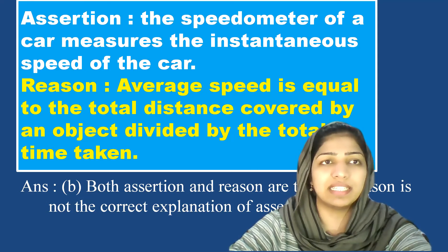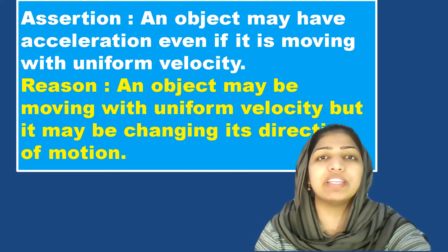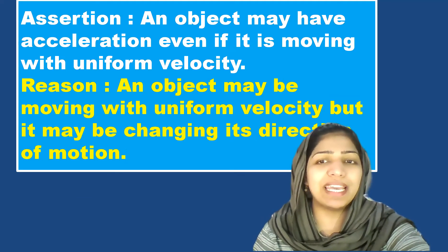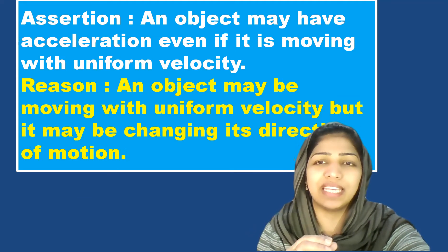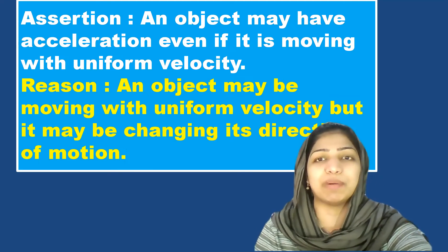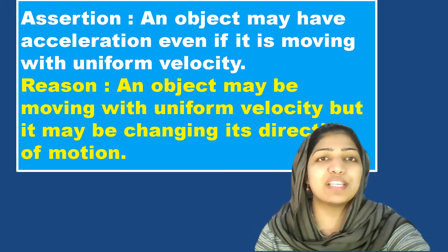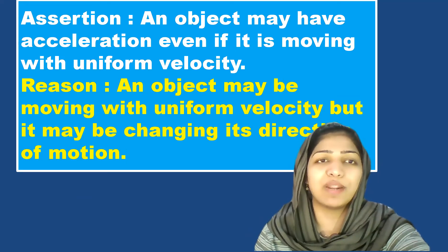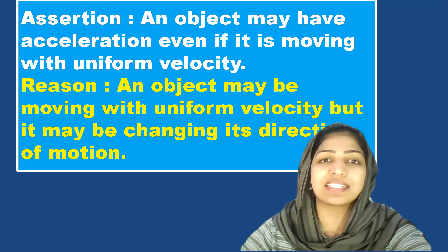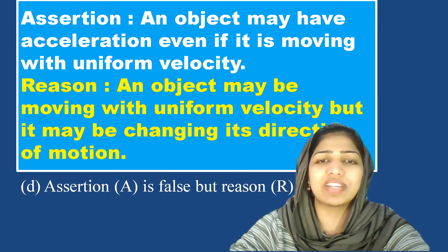An object may have acceleration even if it is moving with uniform velocity. If you look at this — an object may have acceleration even if it is moving with uniform speed — that's a true statement. But uniform velocity means there is no change in velocity, so it cannot have acceleration. That means assertion is false, so we call option D: assertion is false but reason is true.